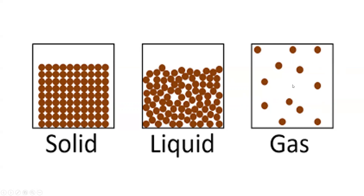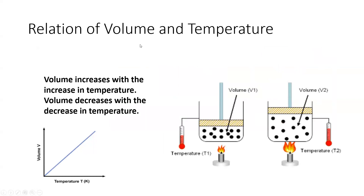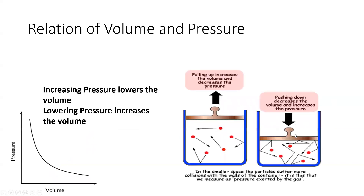The volume and temperature of a gas are related. This is a direct relationship, shown as a straight-line graph. When temperature increases, volume increases; when temperature decreases, volume decreases. This is directly proportional, as shown in the diagram with temperatures T1 and T2.